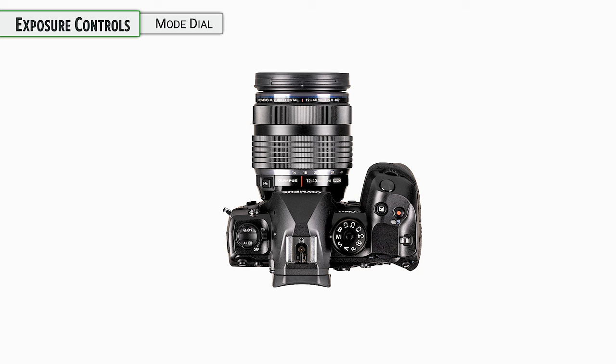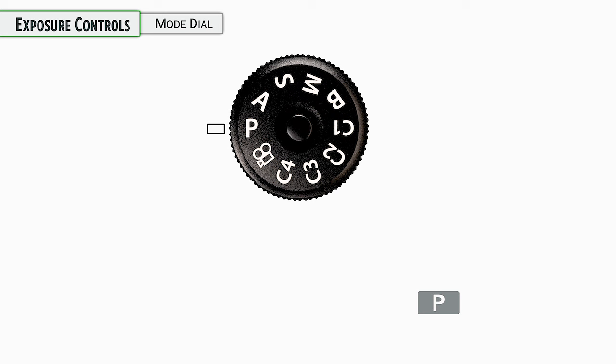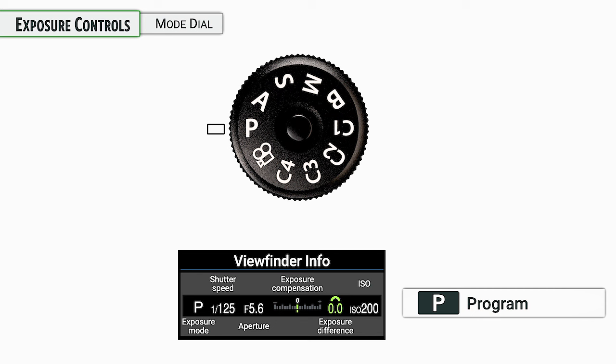First up is the mode dial on the top of the camera. This is our main way of controlling shutter speeds and apertures. There are a lot of very common options on here. We'll start with the most basic of them — that is the program mode. P stands for program, which means the camera is going to control shutter speeds and apertures, and nothing else.